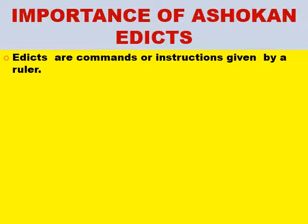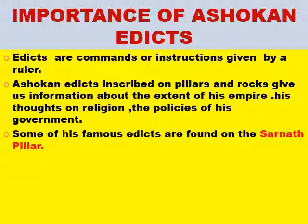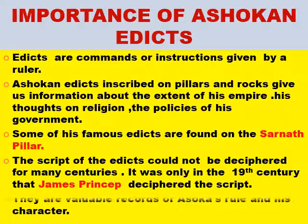The importance of Ashoka's edicts: edicts are basically commands or instructions of the ruler. Ashoka's edicts inscribed on pillars and rocks provide information about the extent of his empire — for example, finding his pillars in southern India tells us his empire extended that far, and the Ashokan edict at Kalsi in Uttarakhand shows he extended his empire there as well. Some of his famous edicts are found in Sarnath. The Brahmi script of the edicts could not be deciphered for many centuries, but in the 19th century a British archaeologist, James Prinsep, deciphered it, giving us valuable information about the rule of Ashoka and the Mauryas.